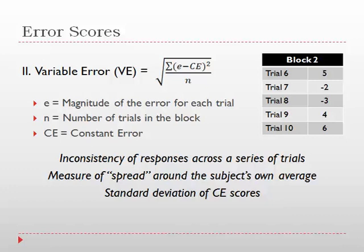Our second type of error score is called variable error, where we take the square root of the sum of the square difference between each individual error score and the constant error for that block. And then we divide that value by the number of trials in the block, where E is the magnitude of error for each trial, n is the number of trials in the block, and CE is constant error. What I would like you to do is pause the video and calculate the variable error for block 2, using the constant error value that we just calculated of 2.2.